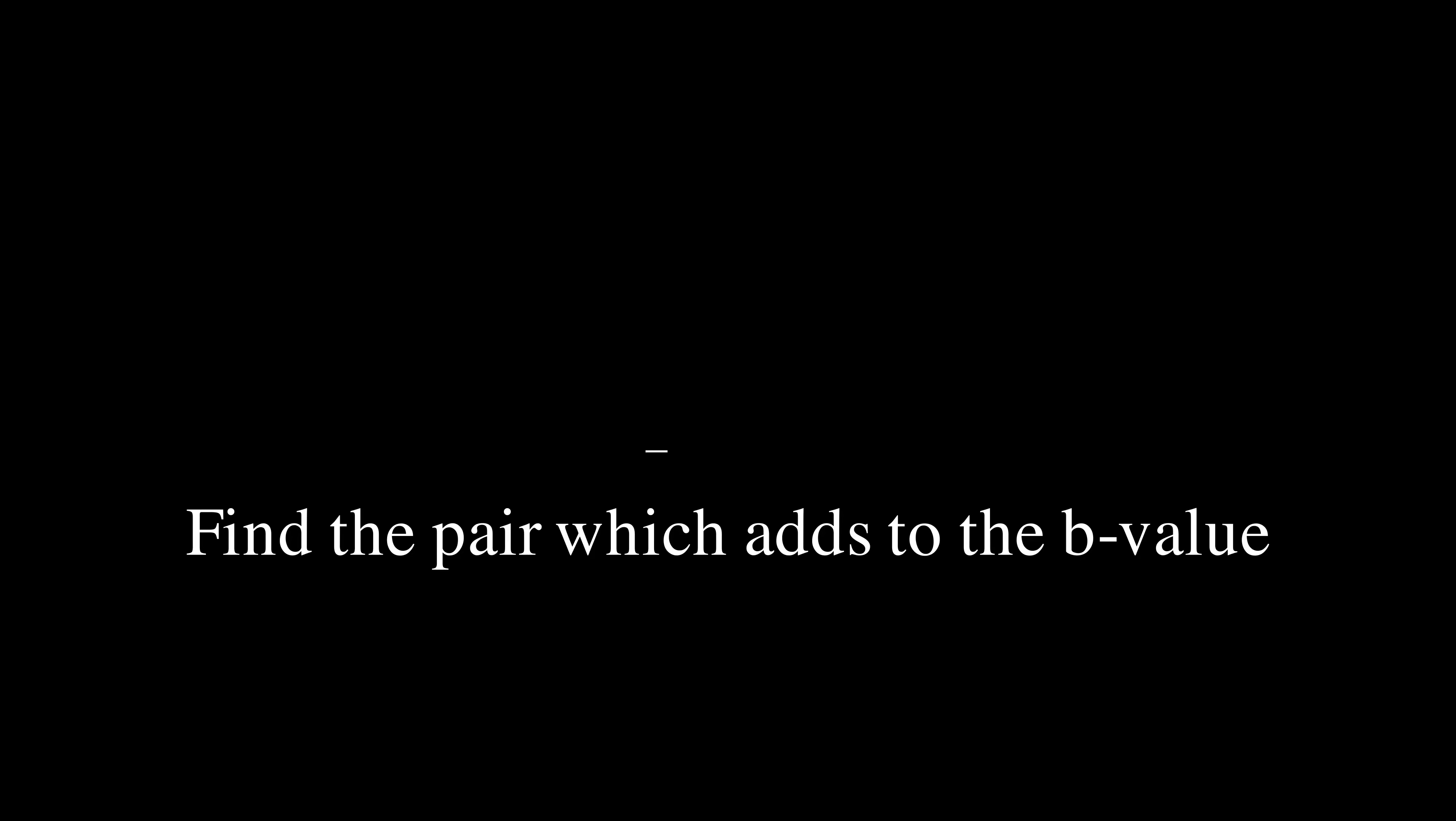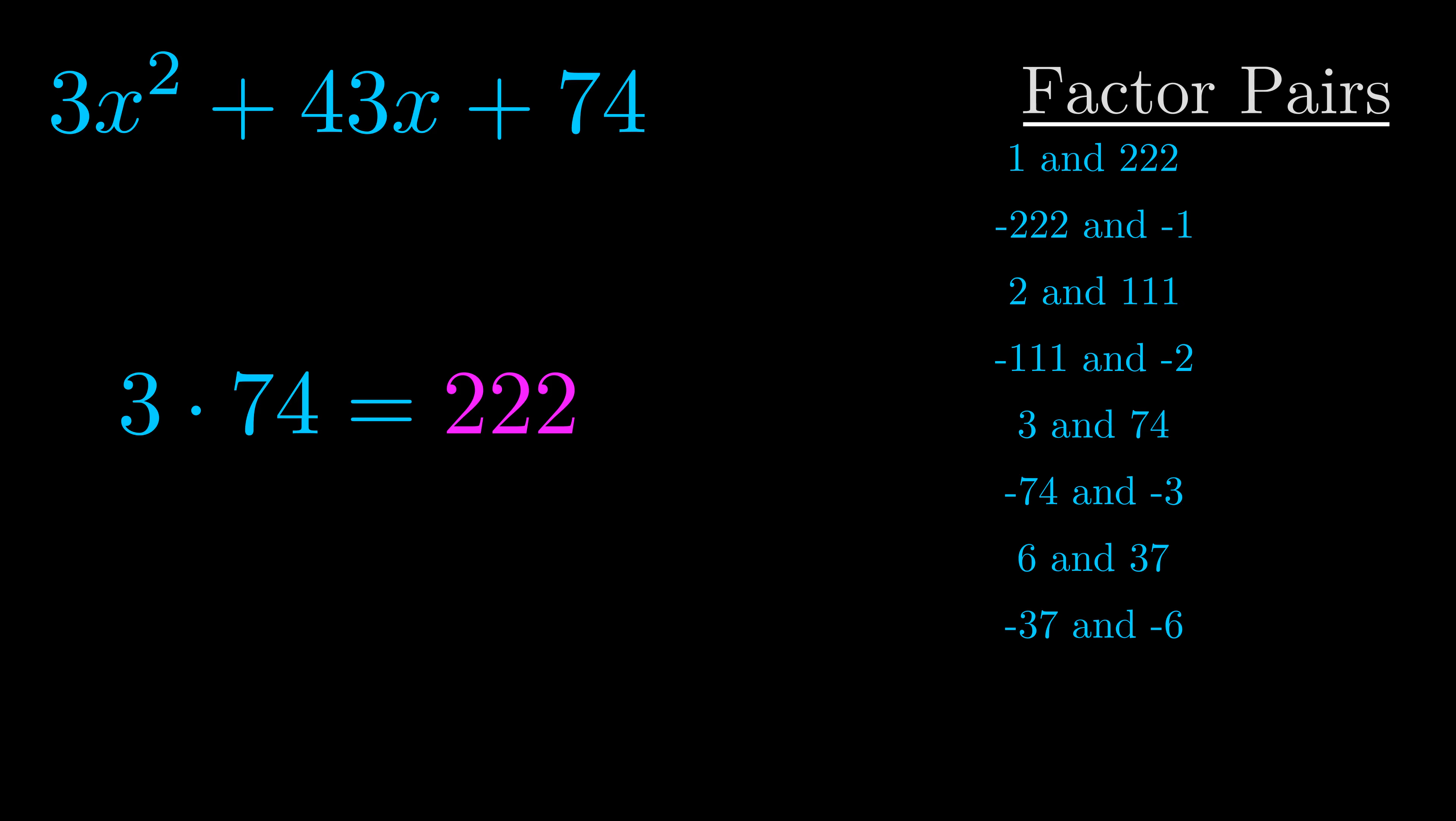The b value is the coefficient on the x term. That's the middle term, the one that we haven't done anything with yet. And really this is the only factor pair that we need.